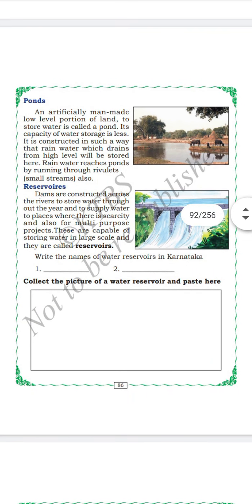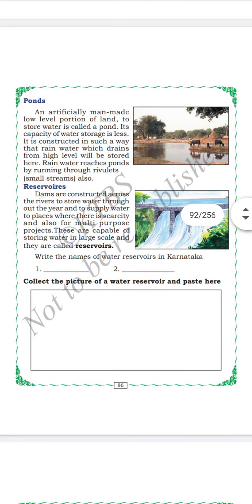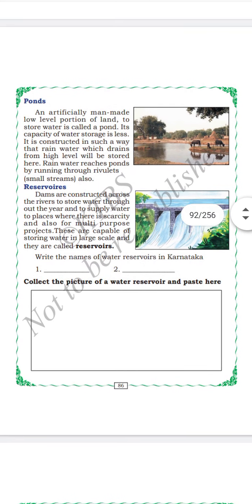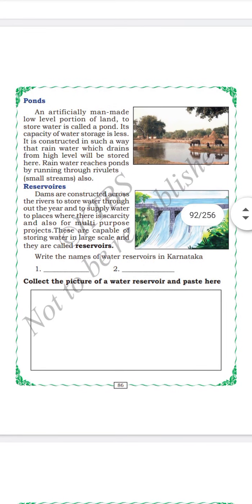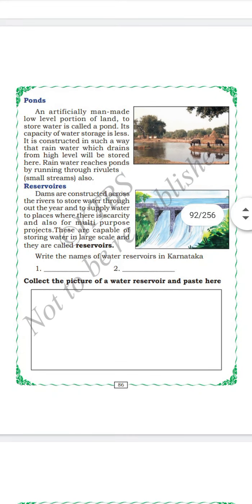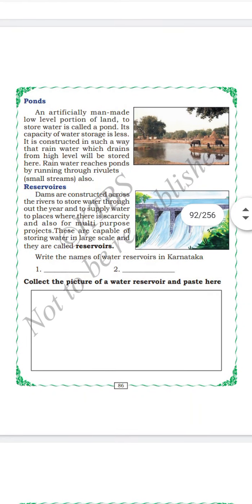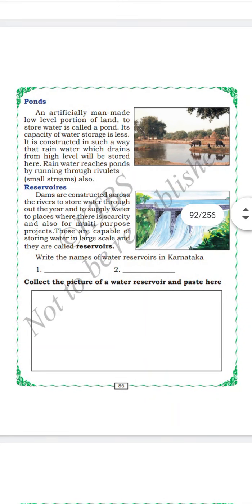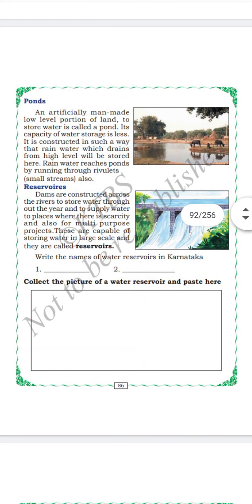Dams are constructed across rivers to store water. A lot of water can be stored through dams throughout the year. This stored water can be used for agriculture, producing electricity, etc.